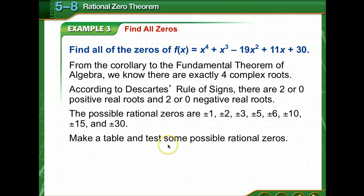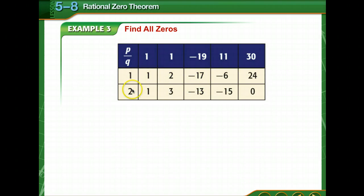We're going to make a table and test some of these possibilities to find out which one might give us a zero. Oh look, 2 gives us a zero when we do synthetic substitution.